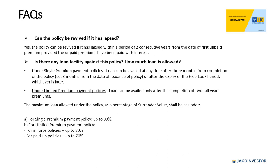Is there any loan facility against this policy and how much loan is allowed? Under single premium payment, a loan can be availed at any time after 3 months from the date of issuance or after the expiry of the free look period, whichever is later. Under limited premium payment, a loan can be availed only after completion of 2 full years of premium. The maximum loan as a percentage of surrender value is up to 80% for single premium, up to 80% for an active limited premium policy, and up to 70% for a paid-up policy.